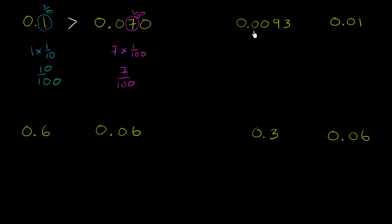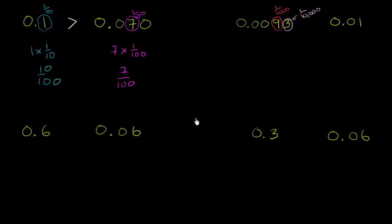So here we have 0.093 and here we have 0.01. This 9 is in the thousandths place, and this 3 is in the ten-thousandths place.